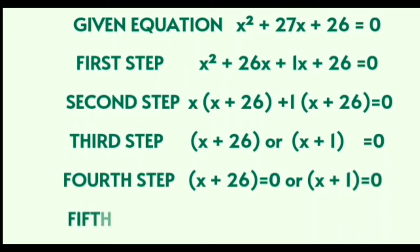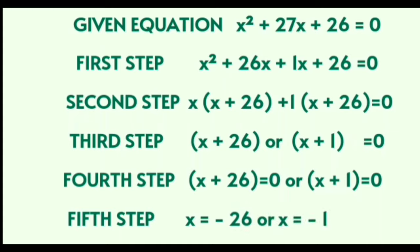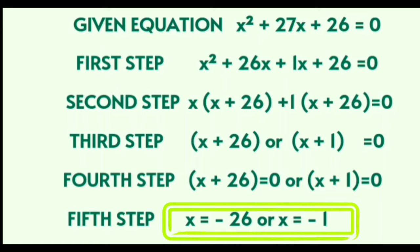The fifth and final step is to find the value of x. The constant term is shifted to the other side, and when it shifts, the sign changes. So plus 26 becomes minus 26, giving x equals minus 26, and plus 1 becomes minus 1, giving x equals minus 1.